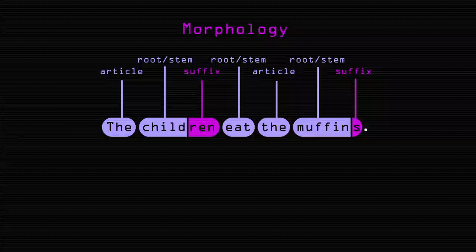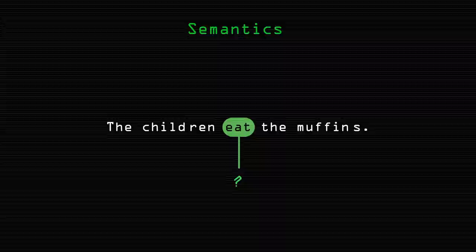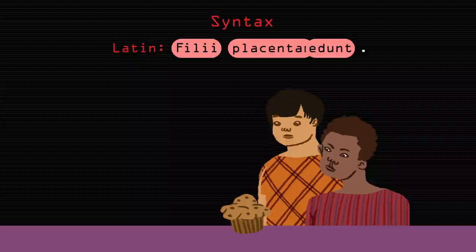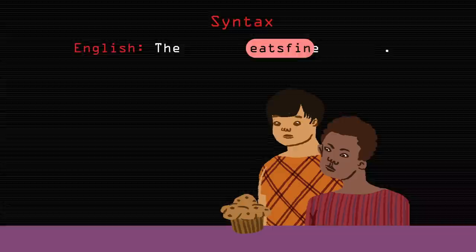Finally, it needs to understand the semantics — what the different parts of the sentence actually mean. To translate this sentence properly, the program would refer to a different set of vocabulary and rules for each element of the target language. But this is where it gets tricky. The syntax of some languages allows words to be arranged in any order, while in others, doing so could make the muffin eat the child.